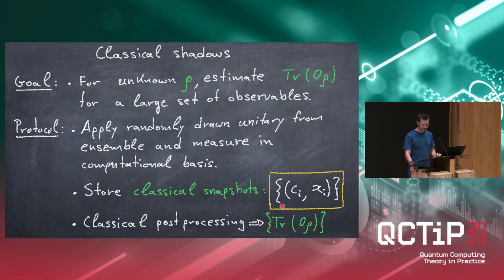So what's the goal here? You're given some unknown state rho and you want to estimate trace of O times rho for some large set of observables, which might not even be specified to you a priori. Because as Richard said, if you actually know what you want to estimate, then there usually are better ways to do this. But this works quite well in this agnostic setting where you don't know a priori what you would want to know.